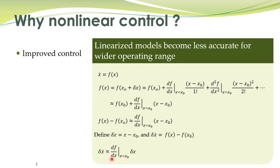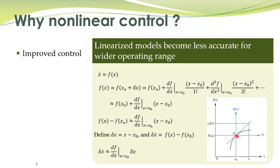However, linear control theory becomes less applicable if we move away from the operating point. Here we have a non-linear graph f(x). What we do is approximate this non-linear curve by a straight line. At the operating point, the black curve is approximately equal to the blue curve — the linear approximation is approximately the same as the non-linear function. However, if we move away from this operating point, the black curve becomes significantly different from the blue curve. So one reason for using non-linear control is that linear control theory becomes less applicable if we have a wider operating range.